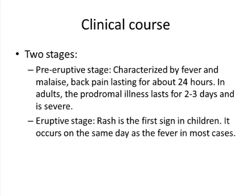Chickenpox is considered in two stages. The first is the pre-eruptive stage — the stage before the rash appears — characterized by symptoms like fever, malaise, and back pain lasting about 24 hours in children. In adults, this prodromal stage lasts longer, around two to three days, and is quite severe, with very high fever and malaise.